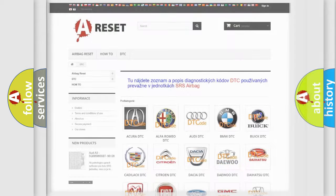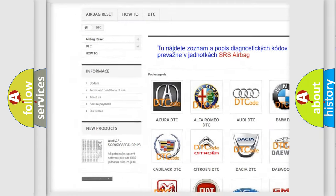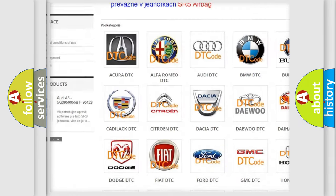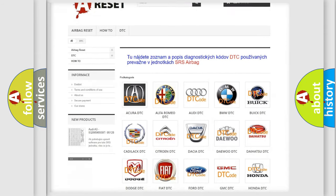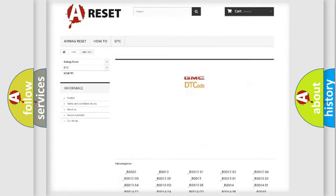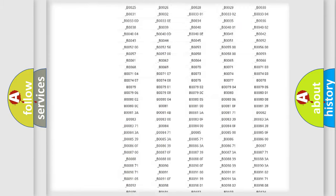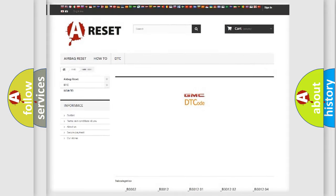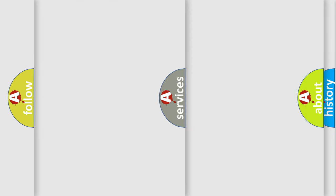Our website airbagreset.sk produces useful videos for you. You do not have to go through the OBD2 protocol anymore to know how to troubleshoot any car breakdown. You will find all the diagnostic codes that can be diagnosed in GMC vehicles, and also many other useful things.